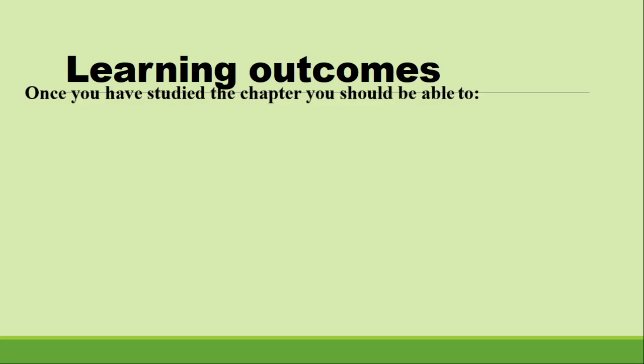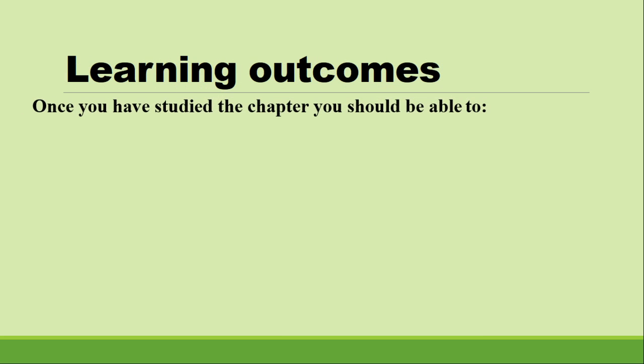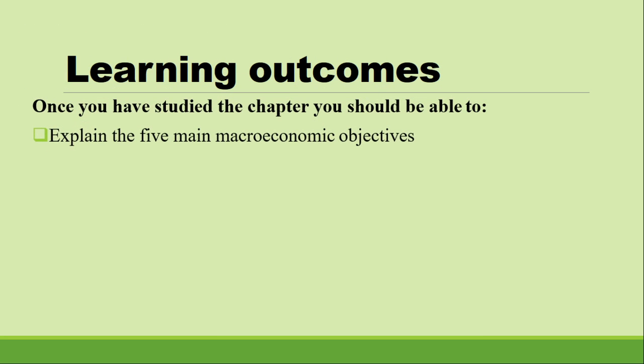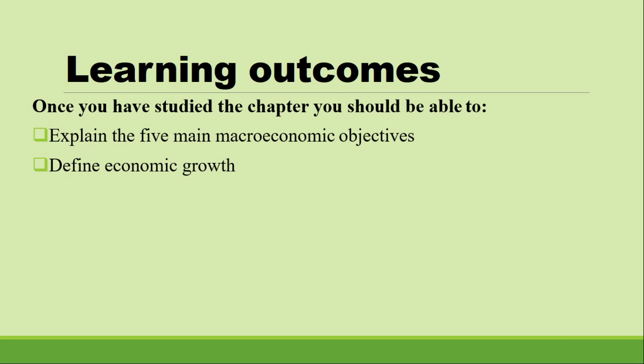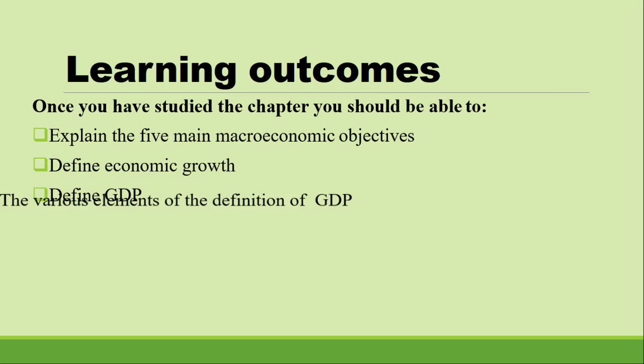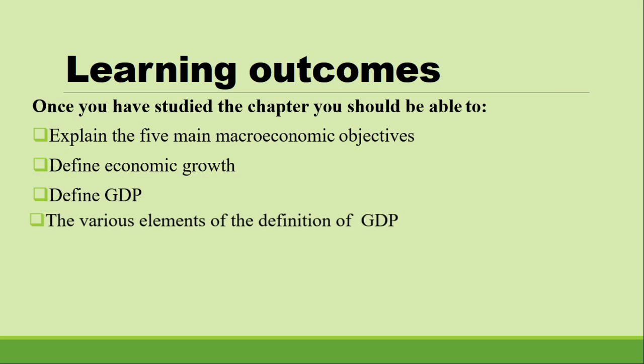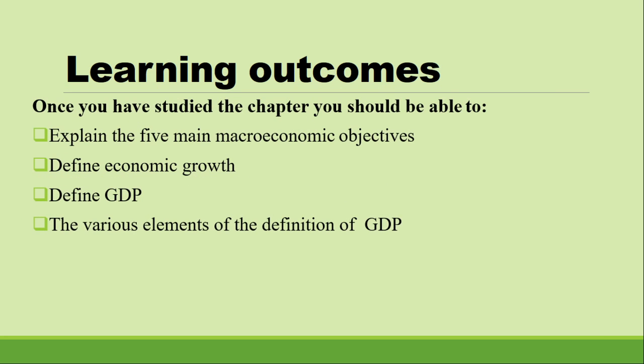At the end of this chapter you should be able to explain the five main microeconomic objectives, define economic growth, and define GDP and the various elements of the definition of GDP.